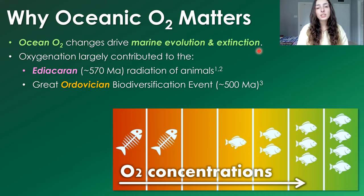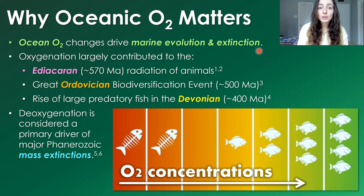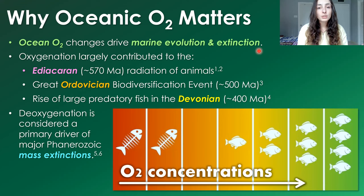Another event likely driven by oxygenation was the Great Ordovician Biodiversification Event around 500 million years ago. Lastly, the rise of large predatory fish in the Devonian around 400 million years ago was also likely driven by oxygen concentration increases. The opposite process — deoxygenation, or the decrease of oxygen concentrations in the ocean — has been a major driver of major Phanerozoic mass extinctions.